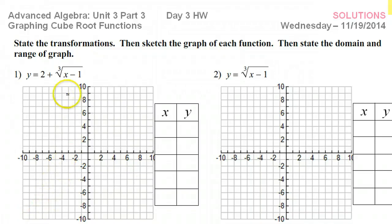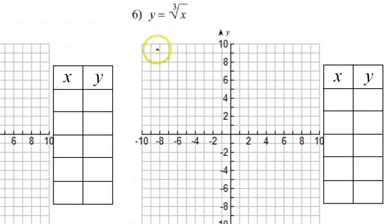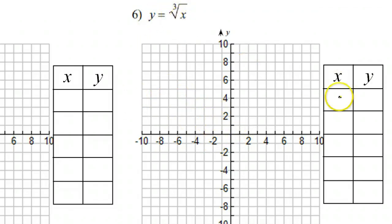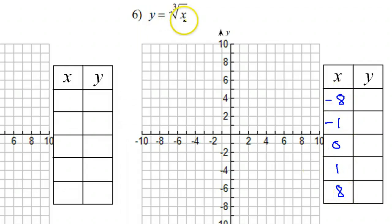This lesson will be about graphing cube root functions. I'm going to skip to number 6 first, since that is the parent function, and all of the other problems will be based off of this. When we want to graph the cube root of x, we always start with the x values negative 8, negative 1, 0, 1, and 8, because these are easy to take the cube root of.